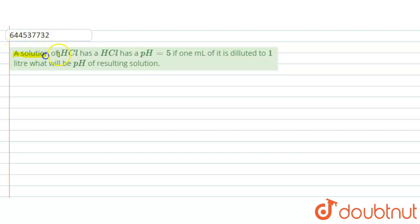Our question is: A solution of HCl has a pH of 5. If 1 ml of it is diluted to 1 liter, what will be the pH of the resulting solution?